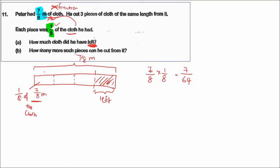So one piece is 7 over 64. He has three of these, so 7 over 64 times 3 gives 21 over 64 — and the unit is meters, because one-eighth of 7 over 8 meter equals 7 over 64 meter, and three of those is 21 over 64 meter.